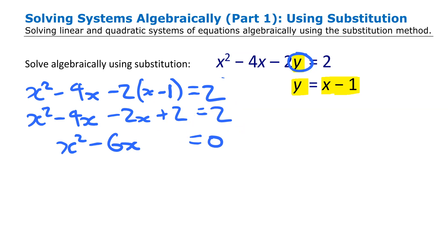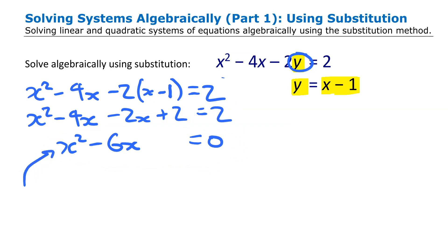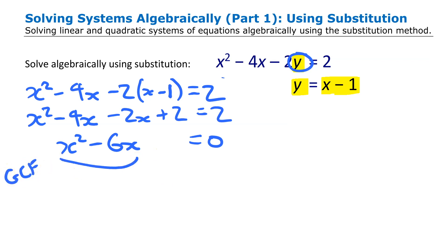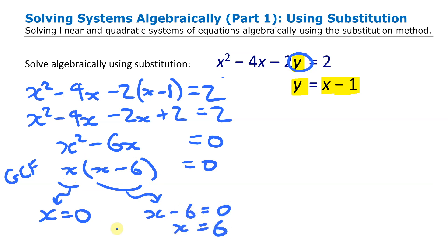The simplest way to solve this is by factoring. There's no C value, so we use the greatest common factor method — x is a common factor. Factoring out x gives x times (x minus 6) equals 0. So either x equals 0 or x minus 6 equals 0, meaning x equals 6. Our two x-values are 0 and 6.